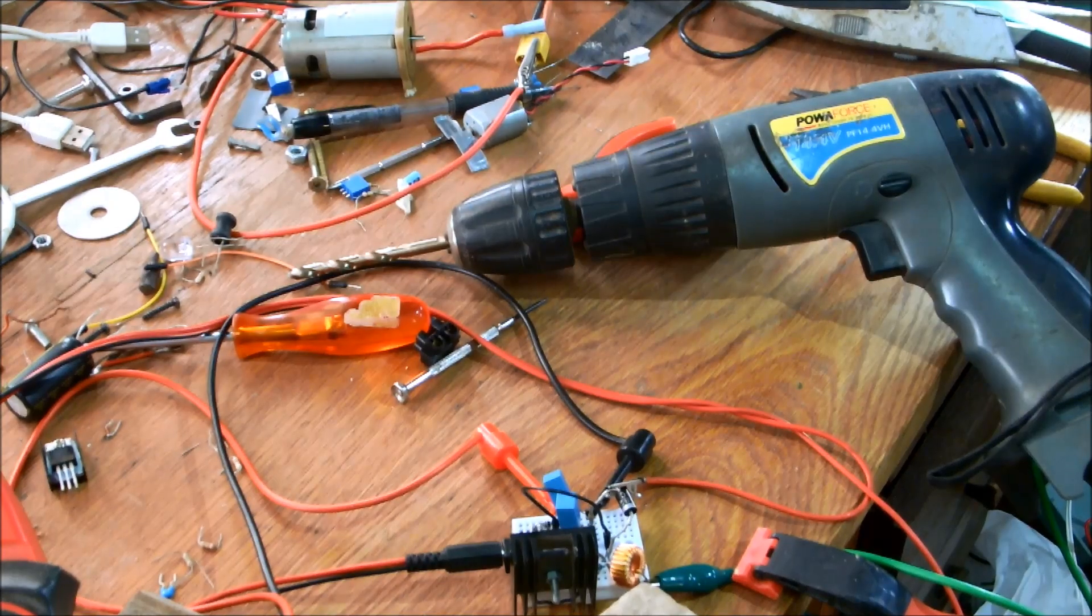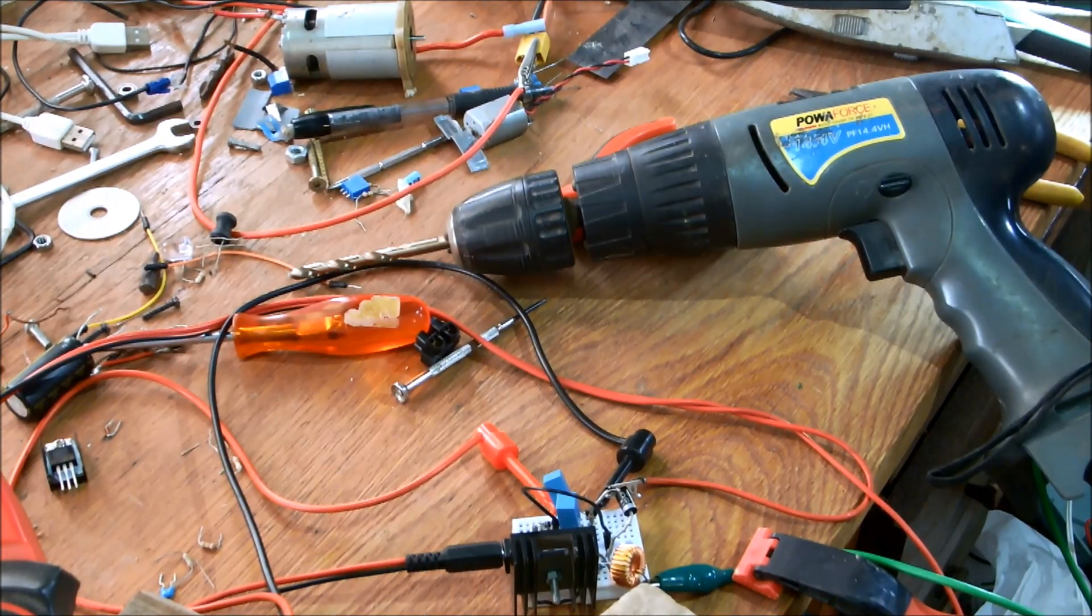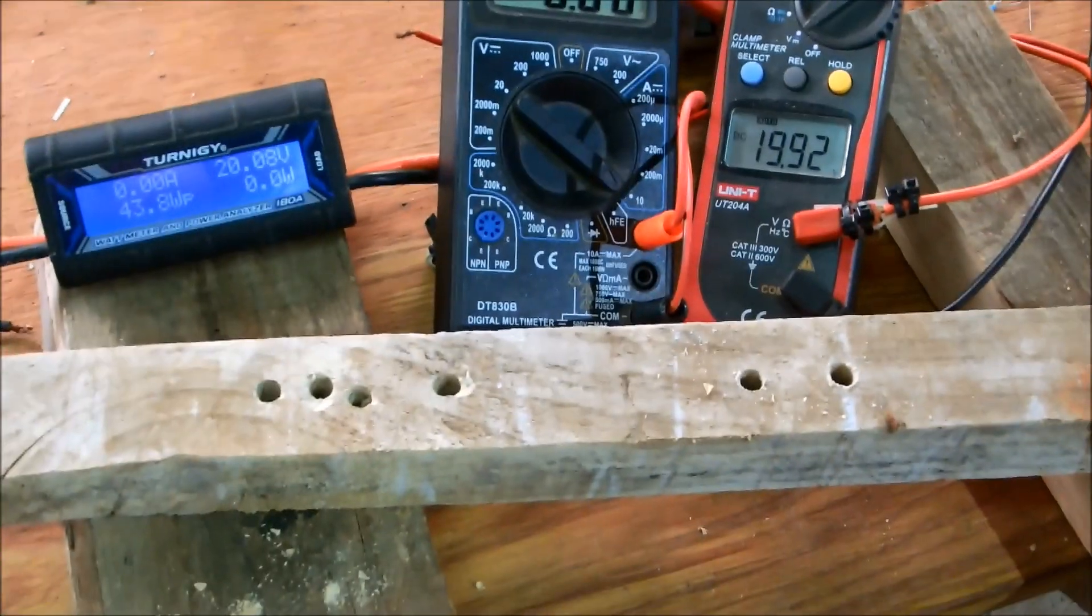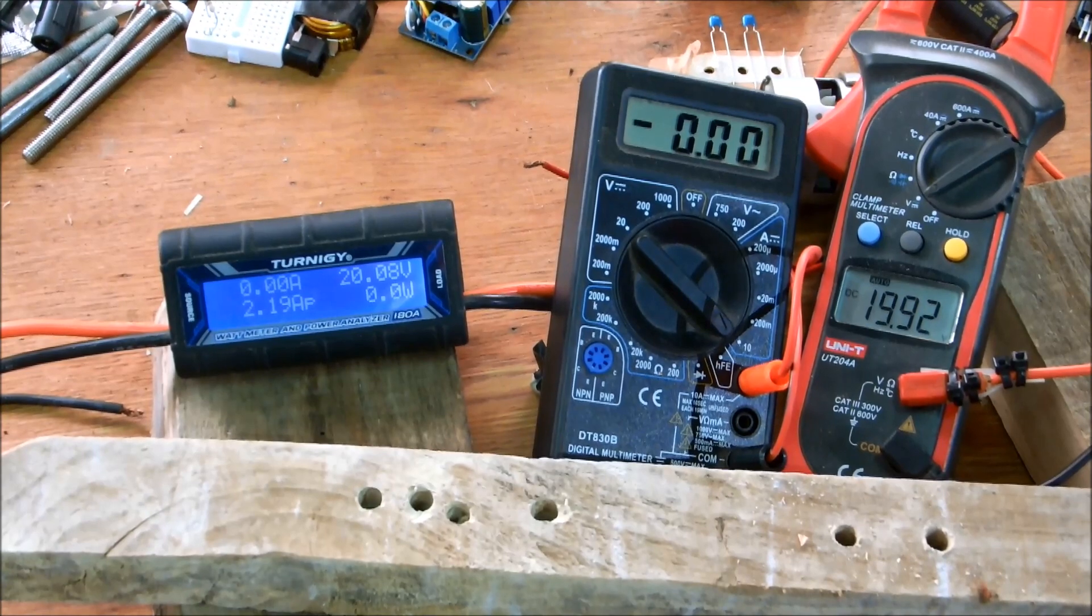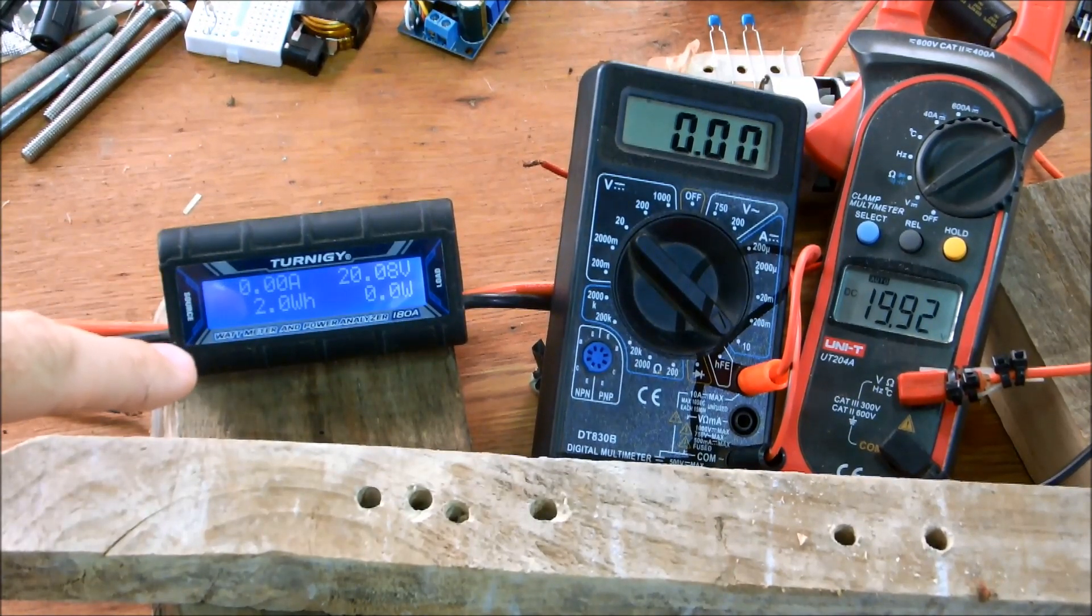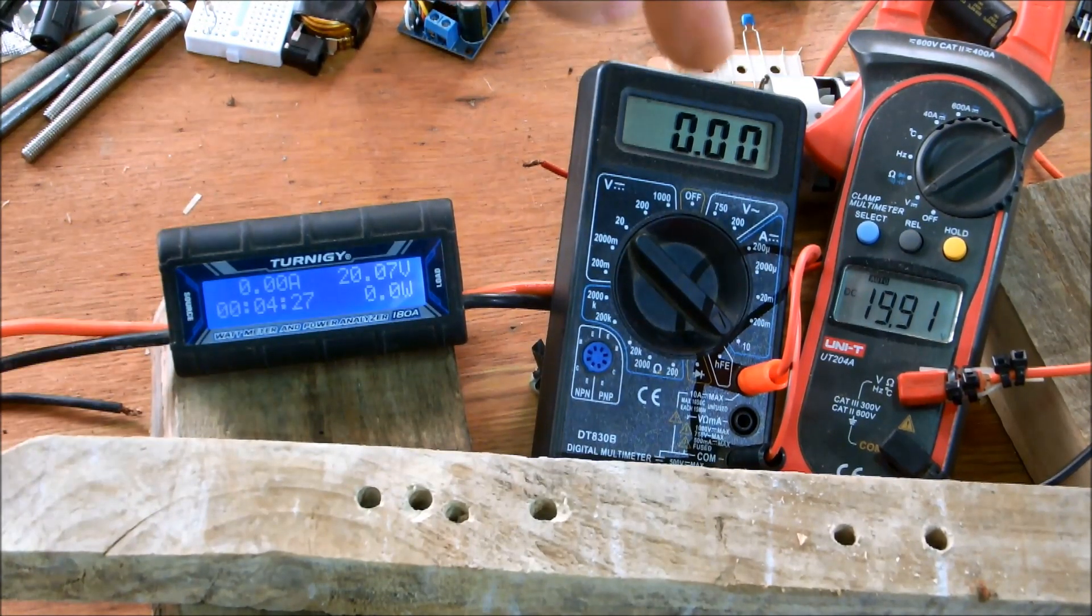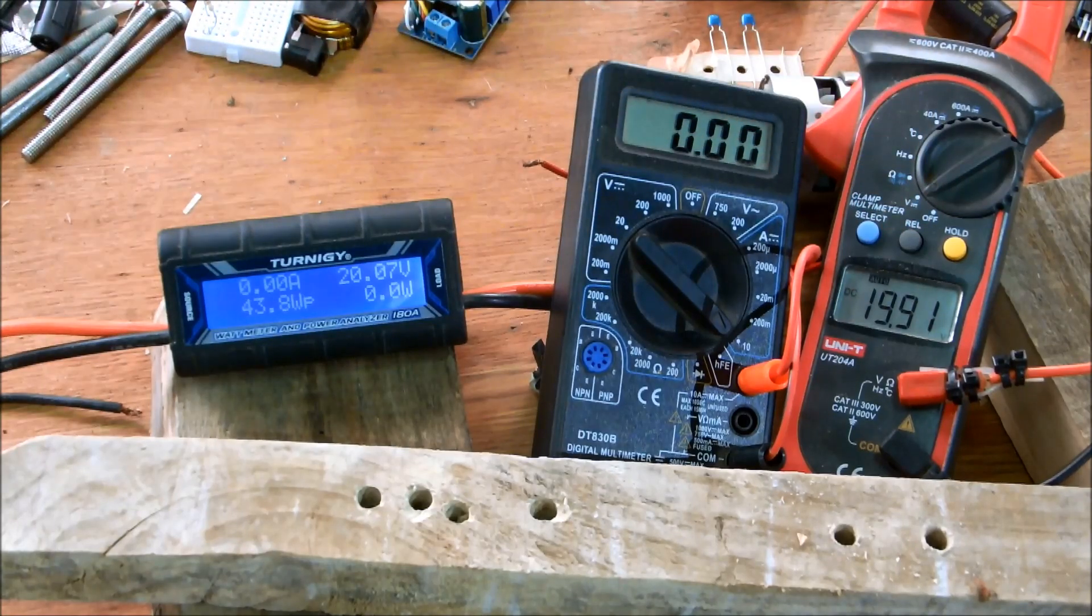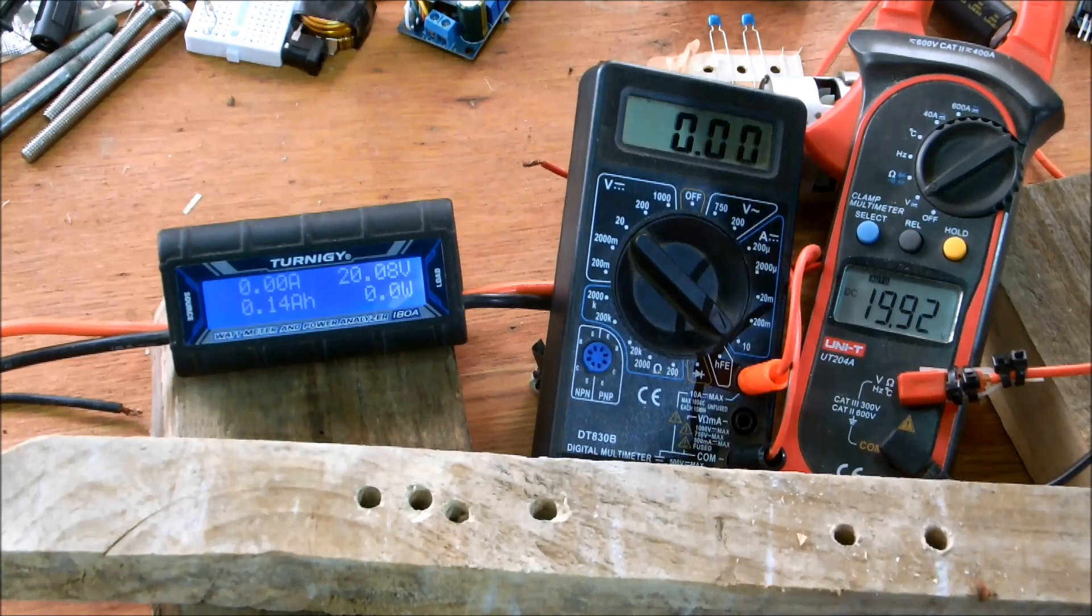I'll be using an old cordless drill with a 6 mm bit and I'll be drilling into this pine. Input parameters are displayed over here. That is current out and voltage out. I will once again first demonstrate with the solar panel connected directly.